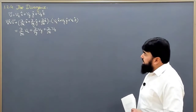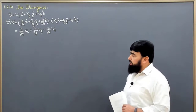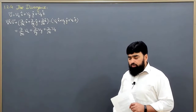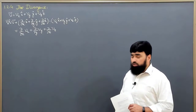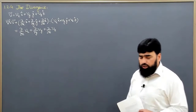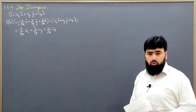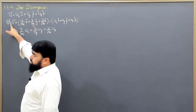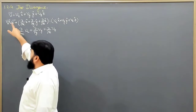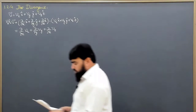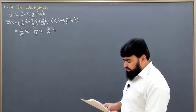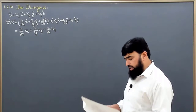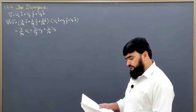We cannot take the divergence of a scalar function, because divergence requires the physical quantity to be a vector — we are finding its dot product. The name divergence is based on the fact that it gives us the spread of that quantity.